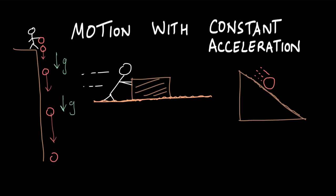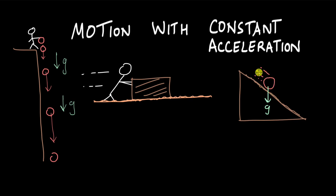For the ball rolling down an inclined plane, there is still gravity acting on the ball. We will learn how to resolve this vector of gravity into a horizontal and a vertical component, and then we will see how there is still one constant acceleration acting on the ball, because of which it moves down with an increasing velocity.